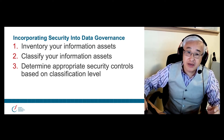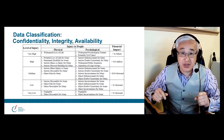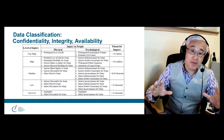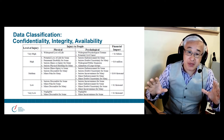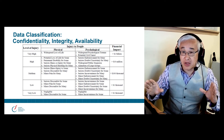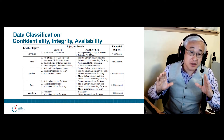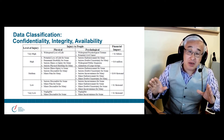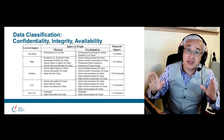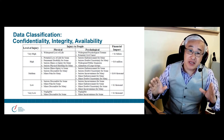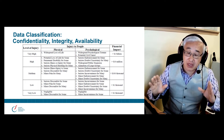On to our next slide: data classification based on confidentiality, integrity, and availability. The slide you see here relates to the level of injury, and this is the way the Canadian government does it. This is part of a methodology used by the RCMP Communications Security Establishment called the Harmony Threat Risk Assessment Methodology, which classifies data based on the level of injury, or level of harm.